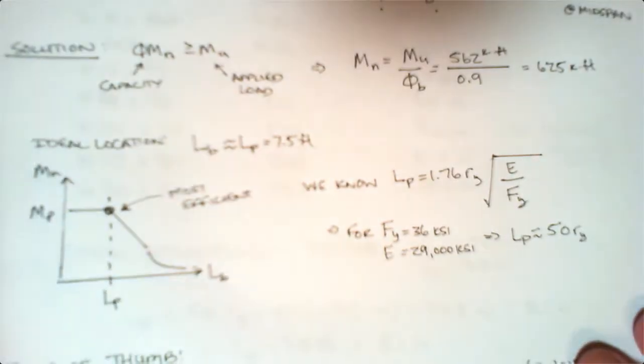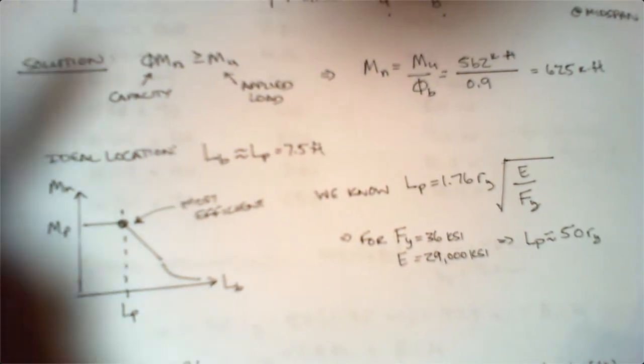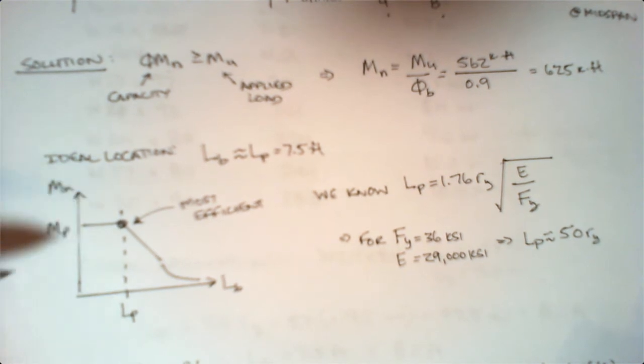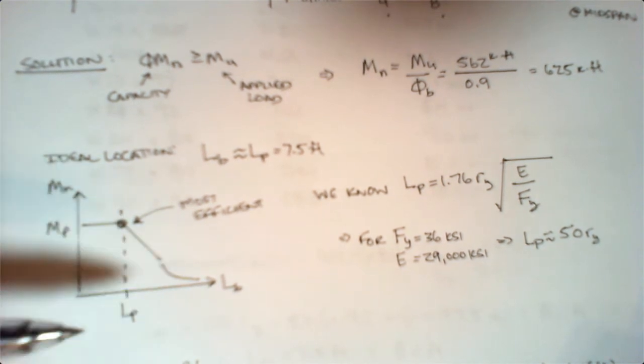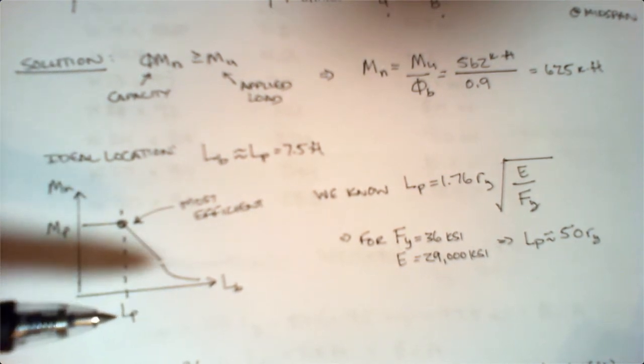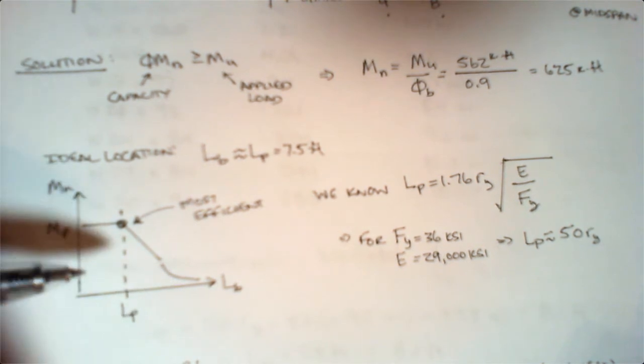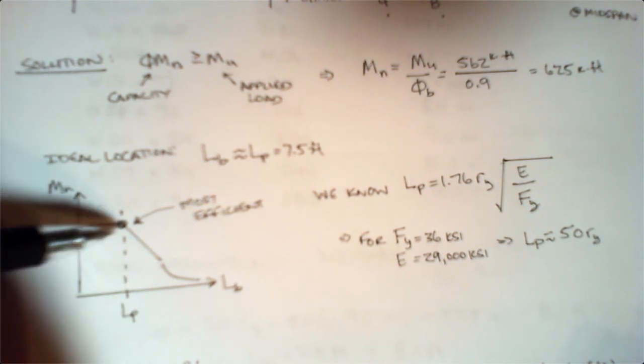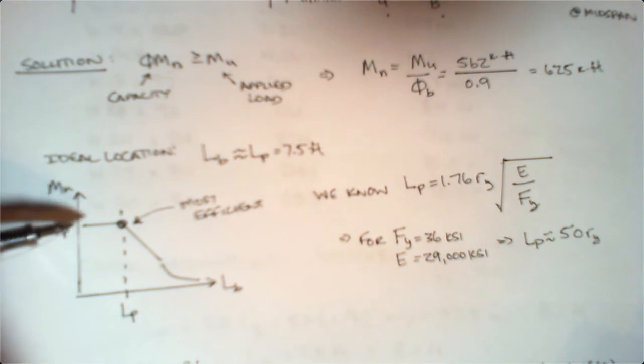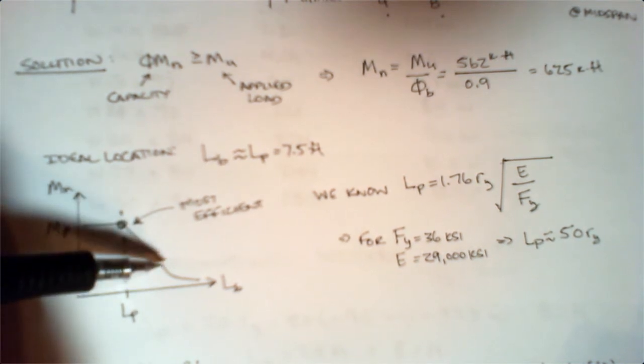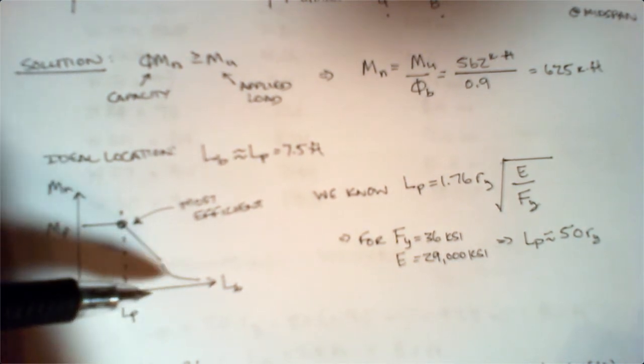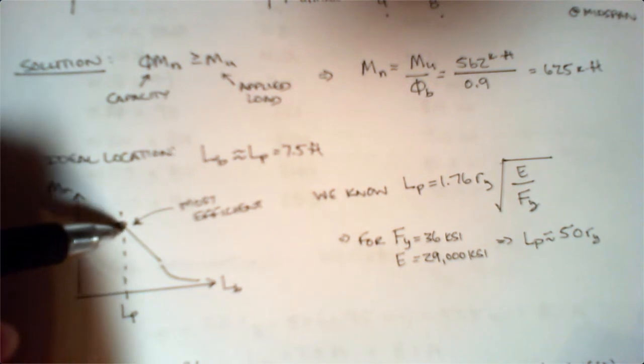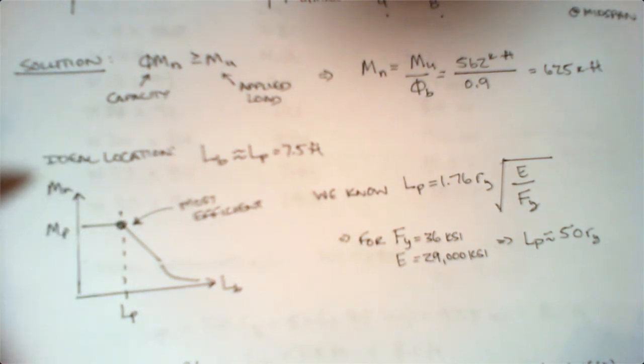Here's where we have to start to make some assumptions. As we talked about last time, this was that general curve that we had for nominal moment versus unbraced length for a lateral torsional buckling problem. We said that in region one it was constant at an Mp value, then it started to drop off linearly, and then it got really weak out here in zone three.